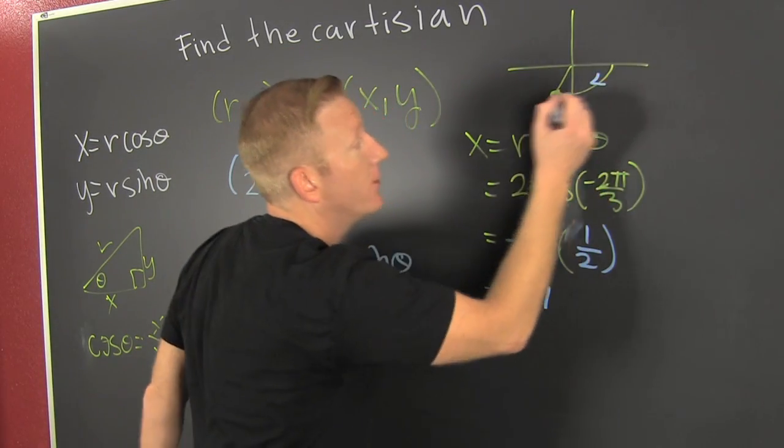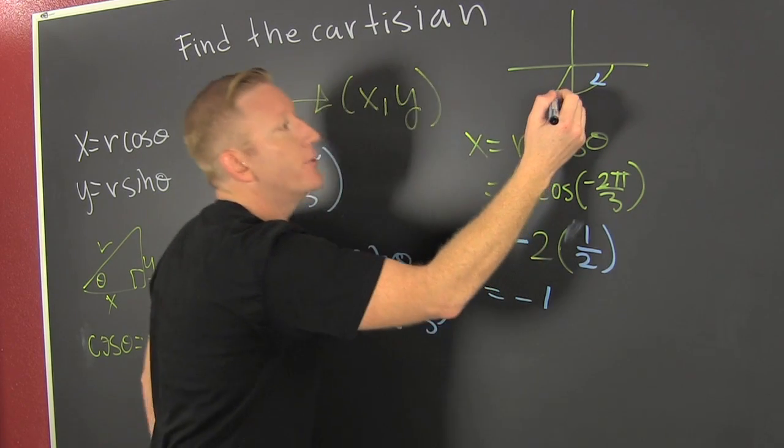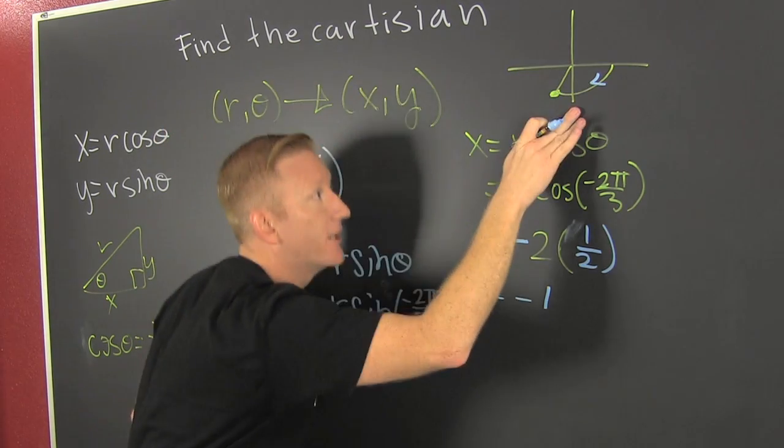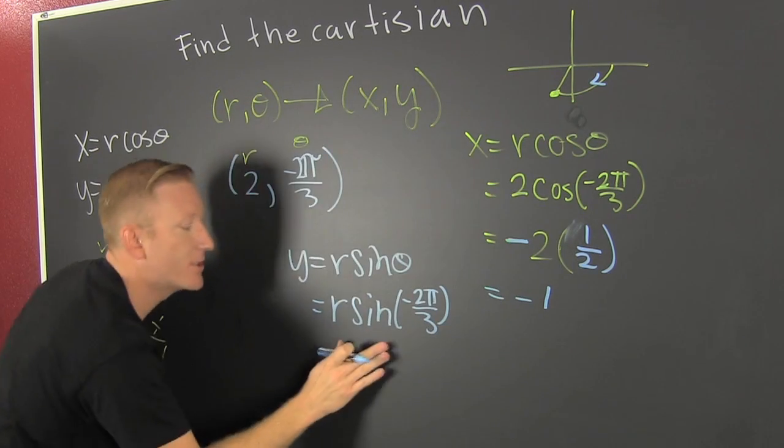Again, we are in a negative rotation. Negative because we go negative rotation. There's 2π over 3 there. Okay, so then our sine is going to be negative because we are below the x-axis.